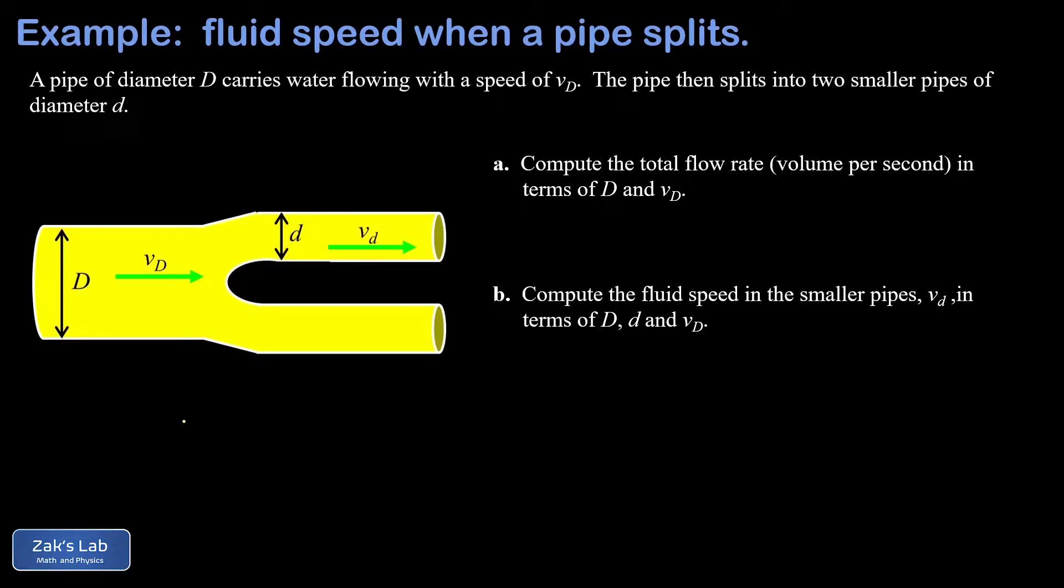Then the pipe splits into two identical pipes that are smaller and they're given this general symbolic diameter of little d with a speed of v_d. We're asked two parts in this question.